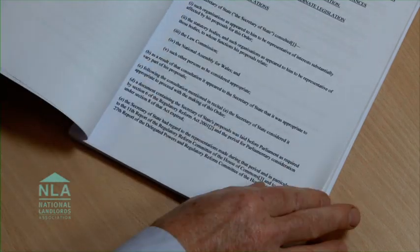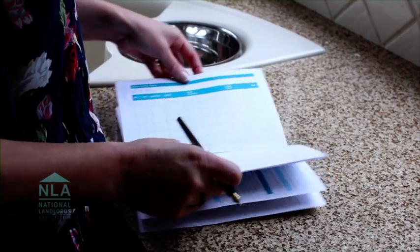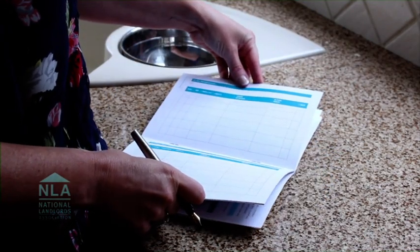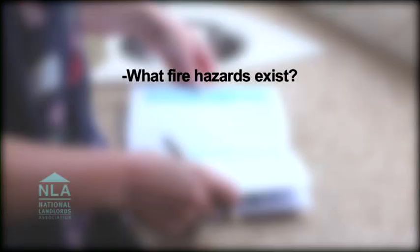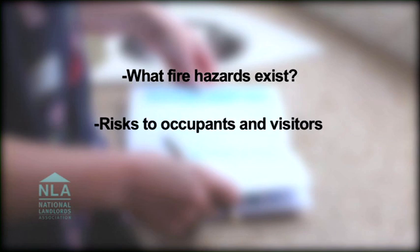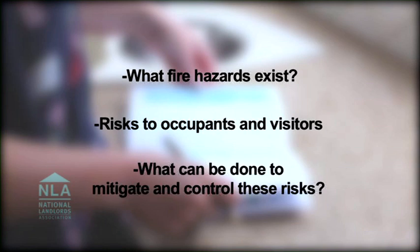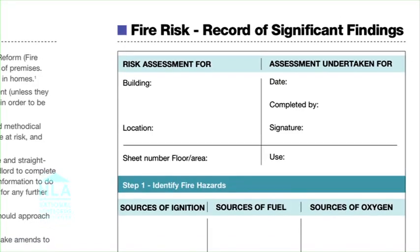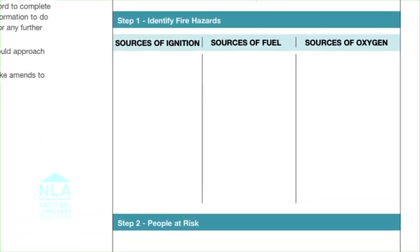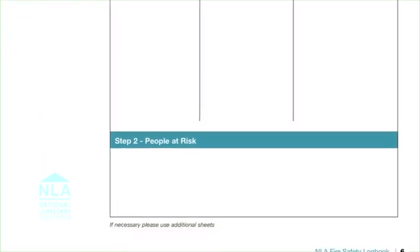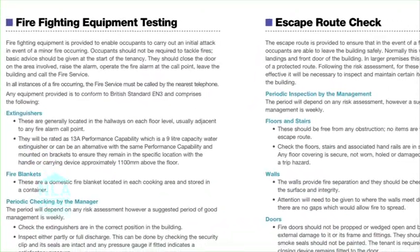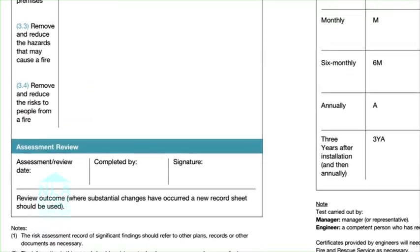A fire risk assessment and the associated guidance enables a landlord to adopt a methodical approach to assessing their premises in order to identify what fire hazards exist, risks to occupants and visitors, and what can be done to mitigate and control these risks. For most rental properties, the risk assessment will be relatively simple with little prior fire safety experience required by the landlord.